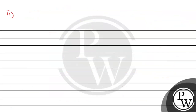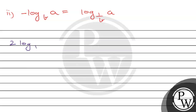The second key concept is: minus log base B of A equals log base (1/B) of A. Now applying this, the given equation is 2·log base (1/25) of (Bx + 28) = minus log base 5 of (12 − 4x − x²). Note that 25 = 5², so 1/25 = 1/5². We rewrite the right side using the key concept.